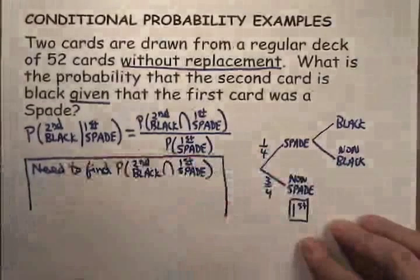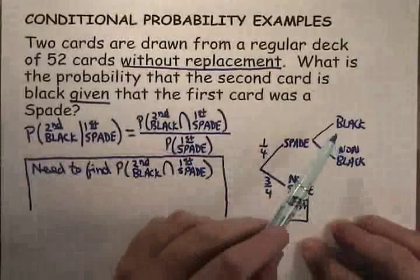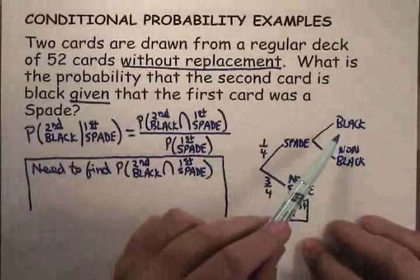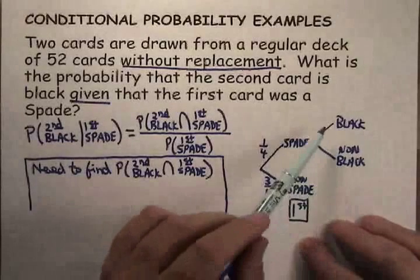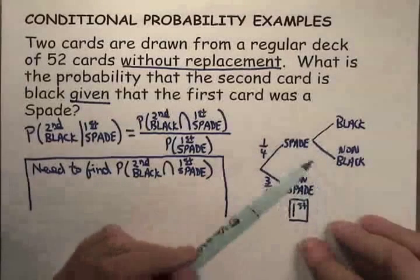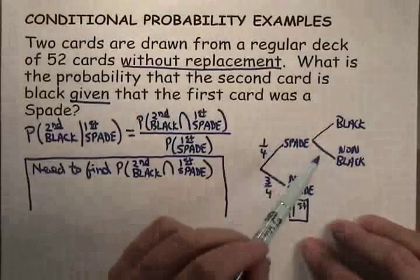Here's where you've got to be very careful. There are 26 black cards and 26 red cards in the deck. So you say, well, it's 50-50, black or not. But that's only if we're replacing the cards.